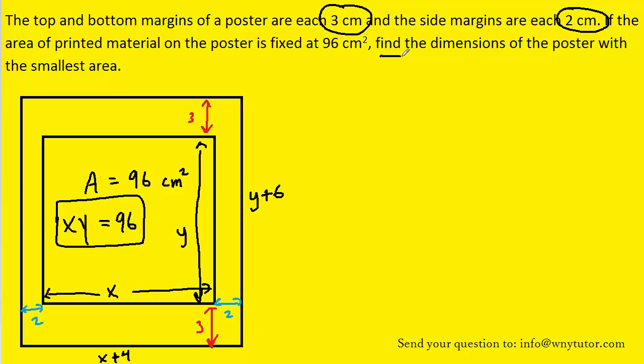Now the question asks us to find the dimensions of the poster with the smallest area. So we need a formula for the area of the entire poster, which again is just the width times the length. So let's write that out. The difficulty with this formula is that it is defined in terms of two variables, x and y. We turn to the other equation and solve it for y.